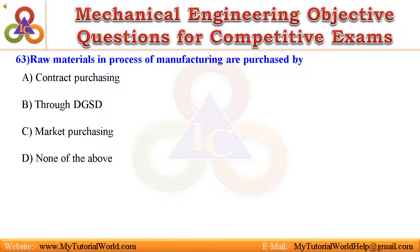63. Raw materials in process of manufacturing are purchased by: A. Contract purchasing, B. Through DGSD, C. Market purchasing, D. None of the above. Answer is Market purchasing.